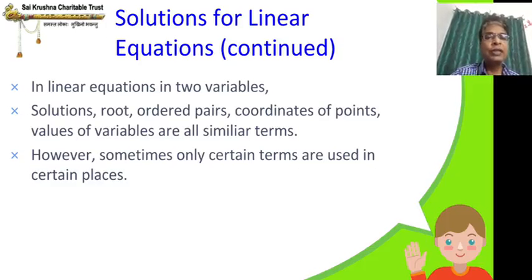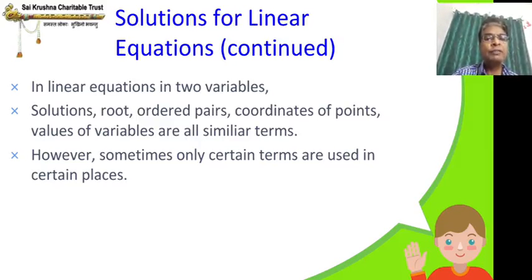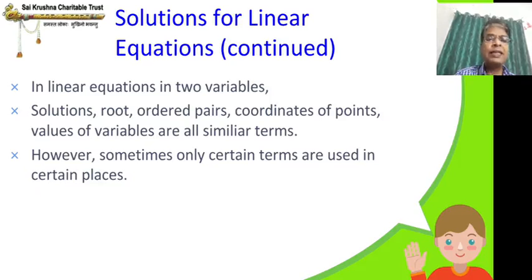Sometimes you may not be able to use solution in place of ordered pair or coordinates of points in place of values of variables interchangeably. However, for this whole chapter, wherever you see any of these terms — solution, root, ordered pairs, coordinates of points, or values of variables — they all mean the same thing: the values of x and y.